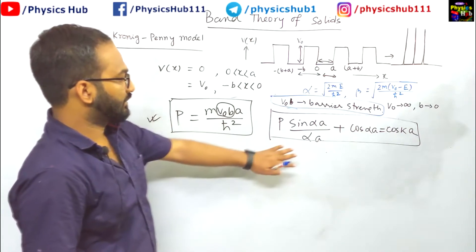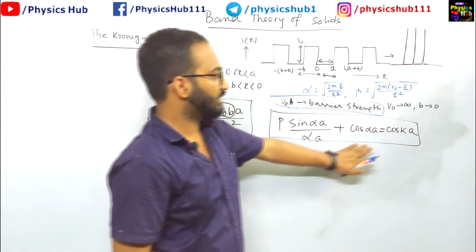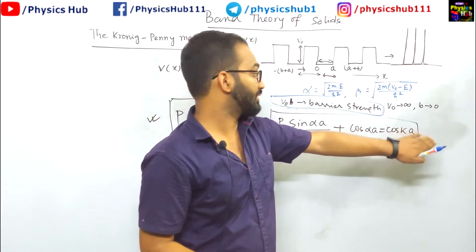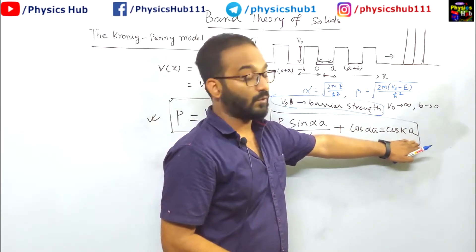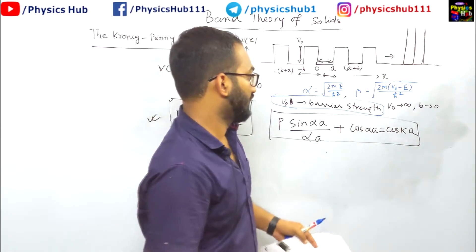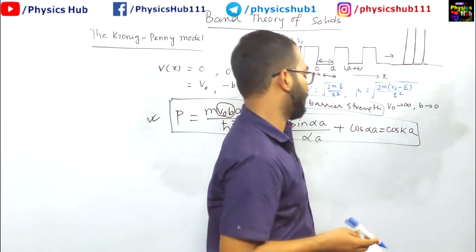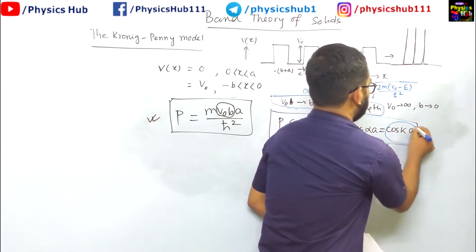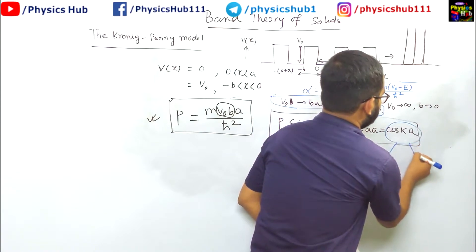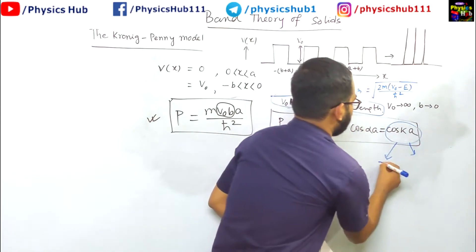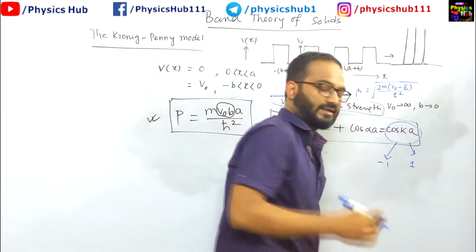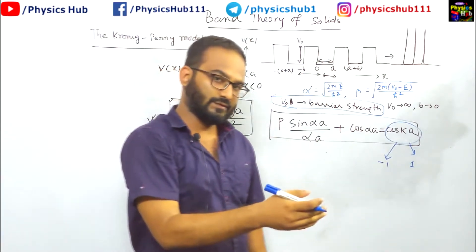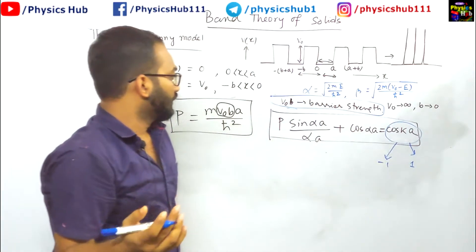Now you see this is the left hand side of the equation and this is the right hand side. On the right hand side, you can see the value of cos k a. You know what is the maximum value of cos k? The range of cos k lies between minus 1 to plus 1. Maximum value is plus 1, minimum value is minus 1.